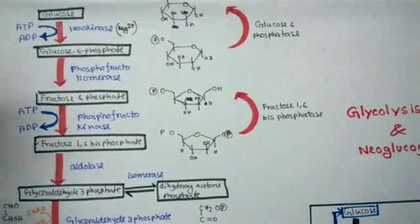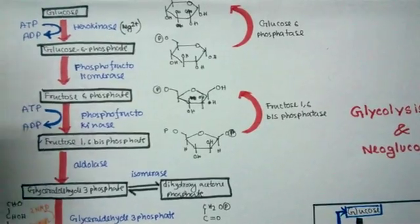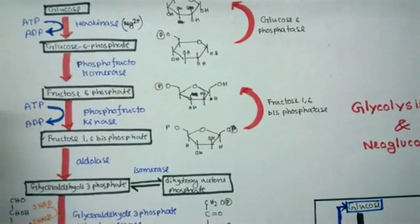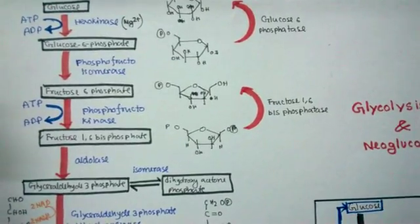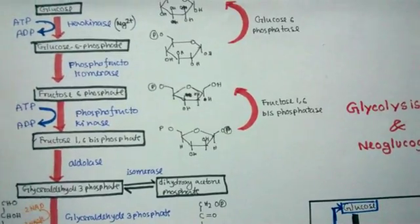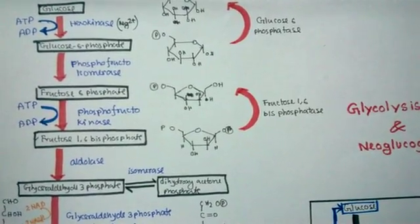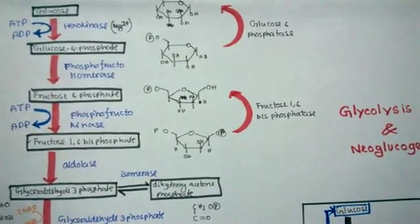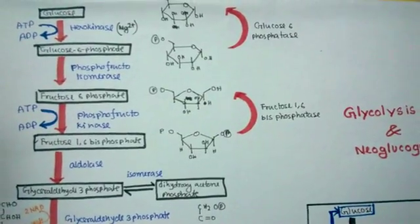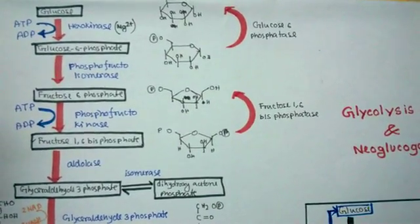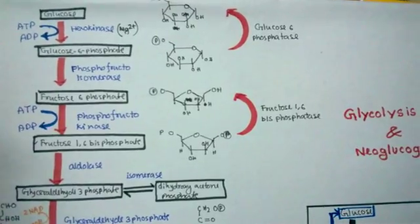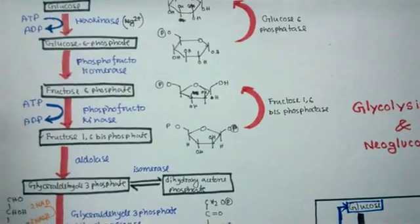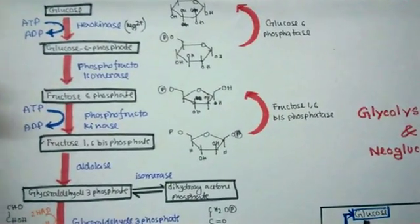The substrate for glycolysis is glucose, and glucose is converted by a 10-step enzymatic pathway to pyruvate. That pyruvate is then utilized in the mitochondria for further energy production. Glycolysis is a very important pathway because cancer cells use mainly glycolysis for their energy purposes — they do not use the mitochondria to yield energy.